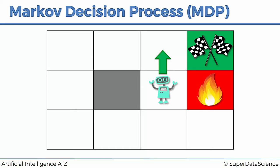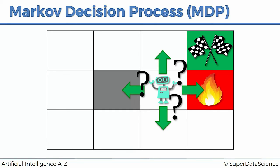A Markov decision process is the framework that the agent will use in order to understand what to do in this environment. We've got an environment with some stochasticity, some randomness, and the agent has to choose whether to go up, down, left, or right. It has to make that decision and apply the MDP framework to do so. Basically, this environment that poses this problem is referred to as the Markov decision process — it's the framework the agent uses, and at the same time the environment the agent is operating in.